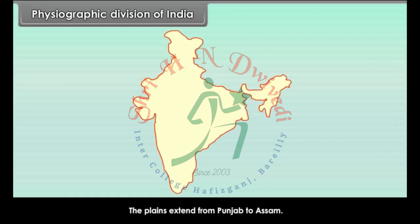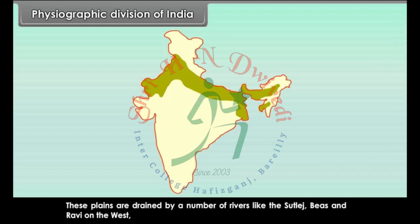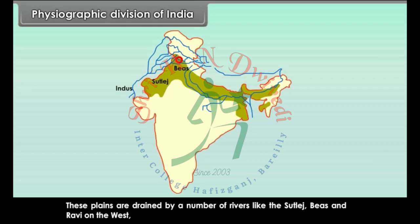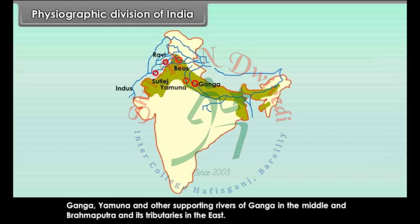The plains extend from Punjab to Assam. These plains are drained by a number of rivers like the Sutlej, Beas and Ravi on the west, Ganga, Yamuna and other supporting rivers of Ganga in the middle, and Brahmaputra and its tributaries in the east.